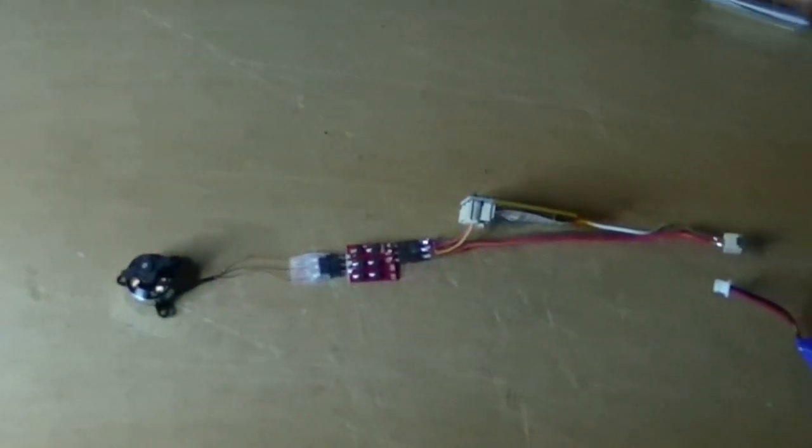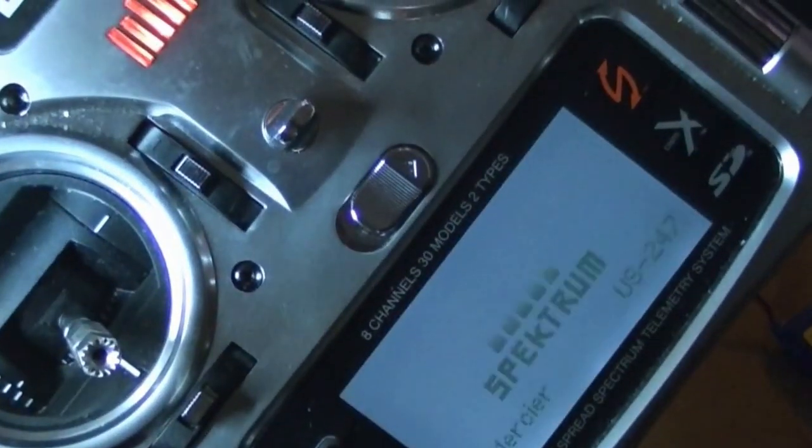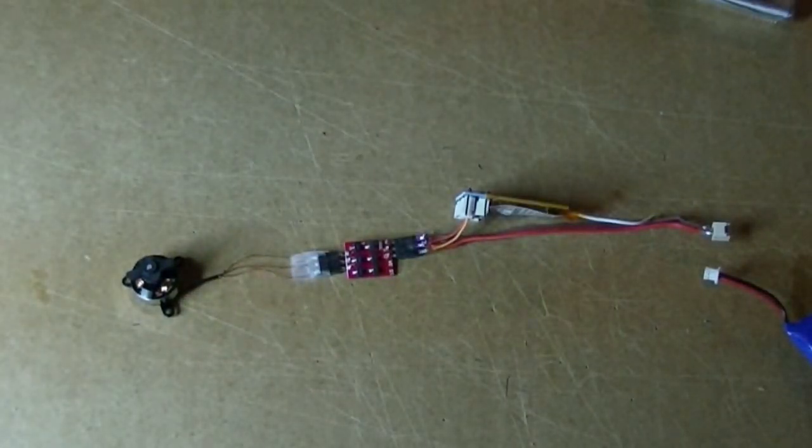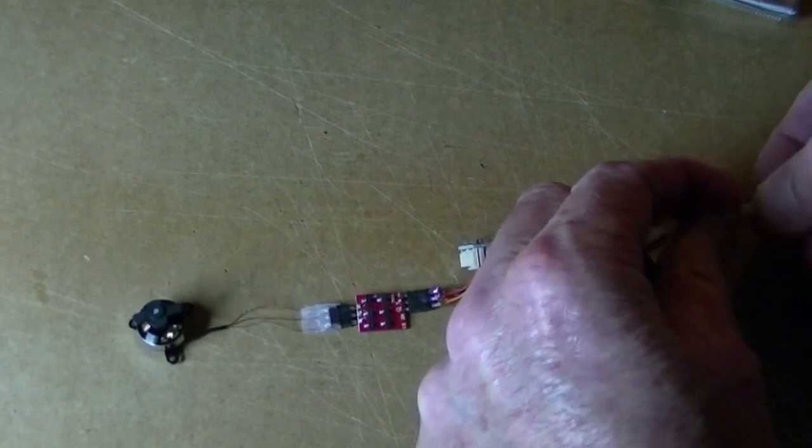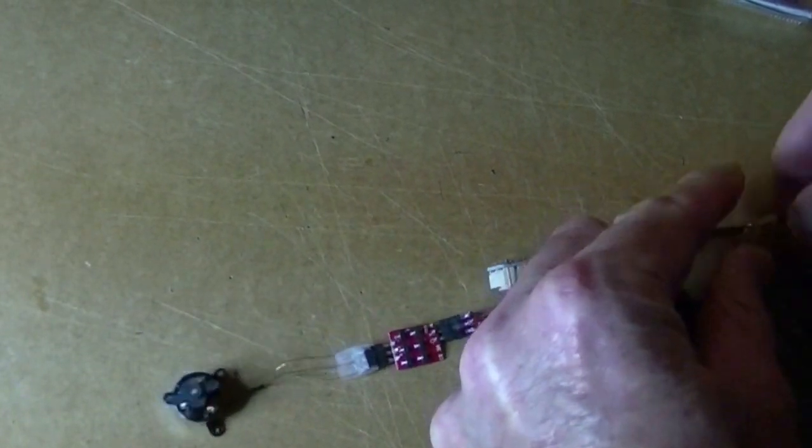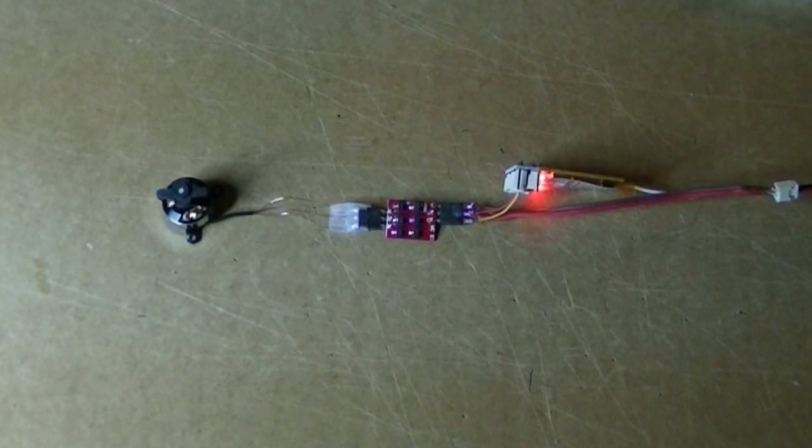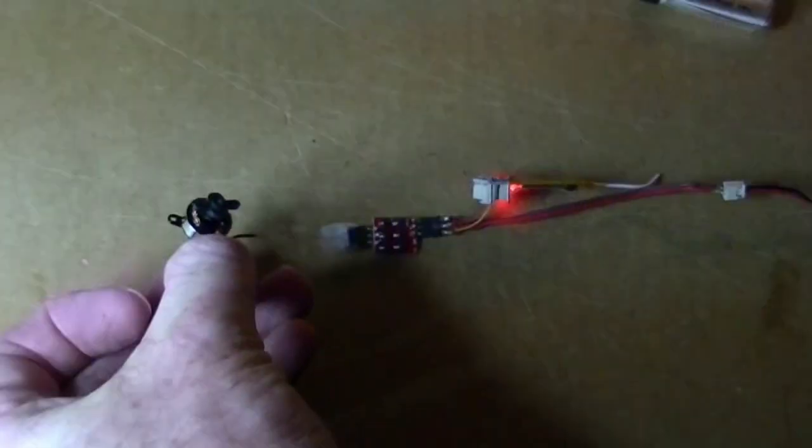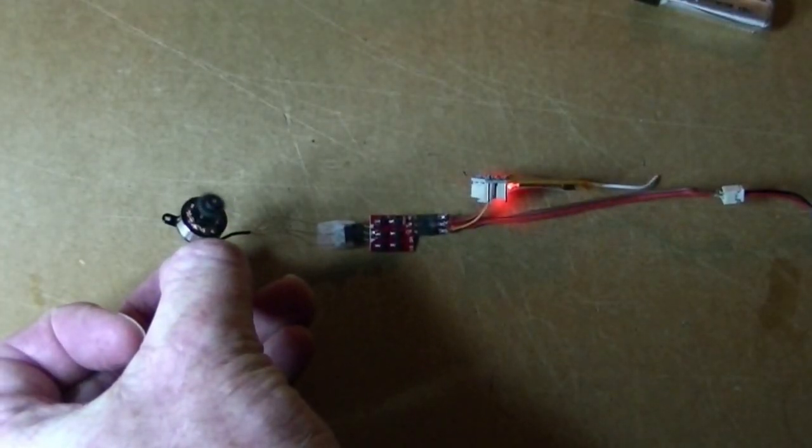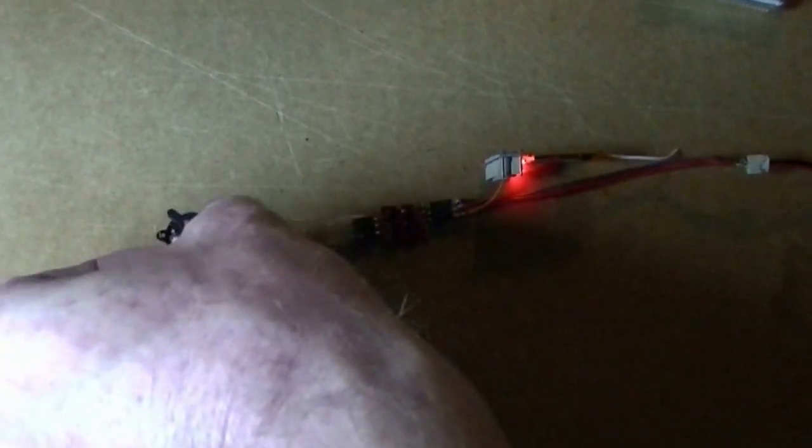So unplug the battery, take the bind plug off. Bind plug is off now. Turn the radio back on and now plug in the battery. And there we go - got all the good sounds. See if the motor will spin. There it goes. So that's a good test.